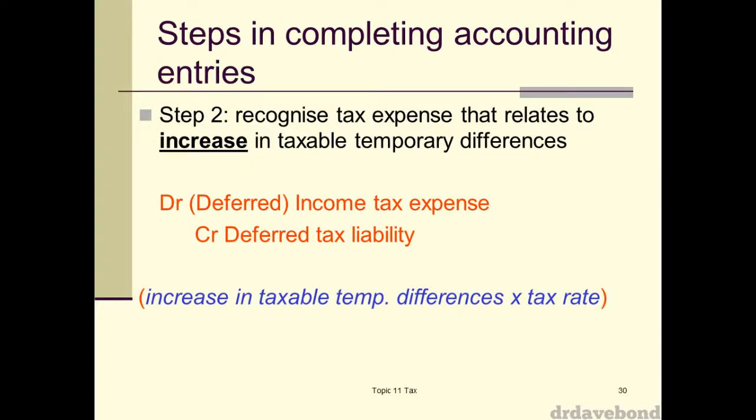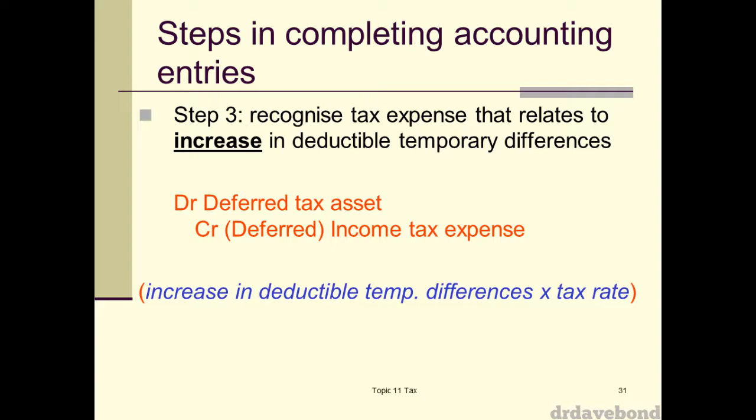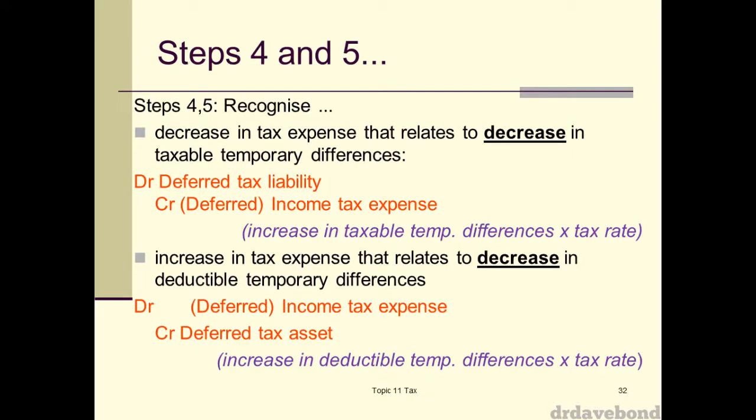Steps two to five can basically be subsumed into the same thing. They cover: recognize the tax expense relating to increases in taxable temporary differences, increases in deductible temporary differences, decreases in taxable temporary differences, and decreases in deductible temporary differences. That all deals with the same thing — look at carrying values, look at the tax base, work out the temporary difference, and work out what we do with it. The process is exactly the same. We just need to figure out if we've got a deductible or taxable difference.